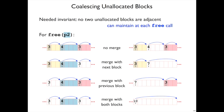It turns out there are four cases that cover all the possible cases. One is that the block that you're freeing is in between allocated blocks. In that case, there's nothing to merge. You just set the bit as before.